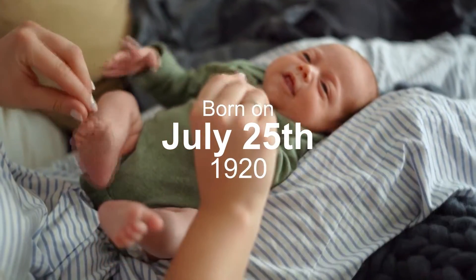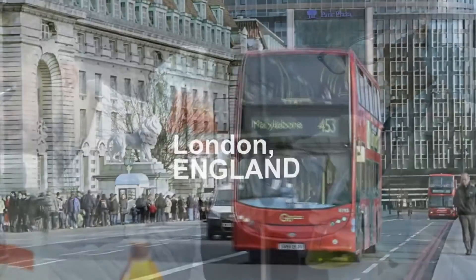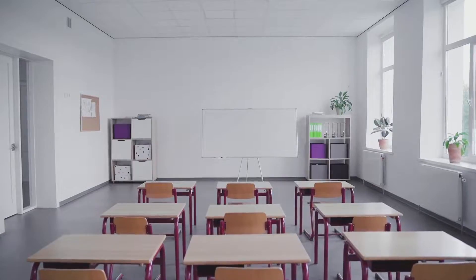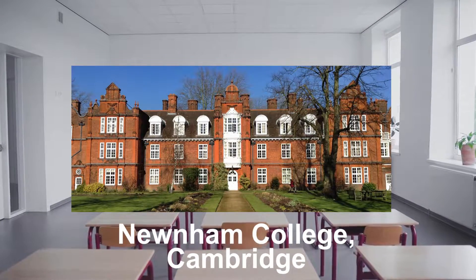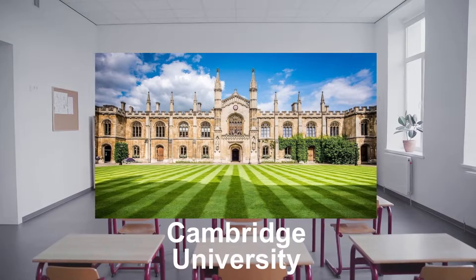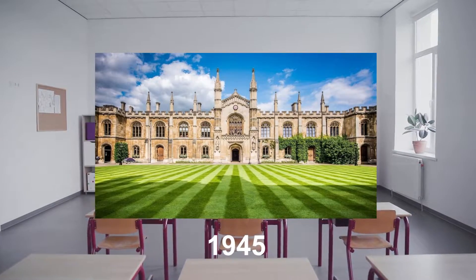Born on July 25, 1920 in London, England, Rosalind knew from the age 15 that she wanted to become a scientist. Franklin enrolled at Newnham College in Cambridge in 1938 and studied chemistry. She then went on to earn her PhD at Cambridge University in 1945.